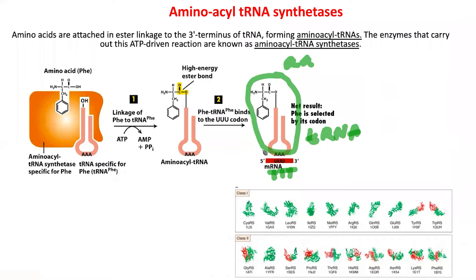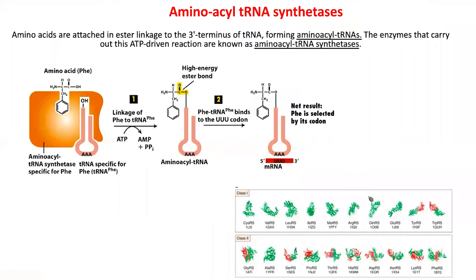Since there are 20 transfer RNAs and 20 amino acids, there is a one-to-one pairing: only the same transfer RNA with its specific anticodon triplet for each amino acid. The conjugation of these two is carried out by aminoacyl-tRNA synthetase. Rather than a single enzyme, there are 20 aminoacyl-tRNA synthetases — 20 enzymes each pairing one amino acid to one tRNA. Once this complex is formed, it moves to the ribosome.